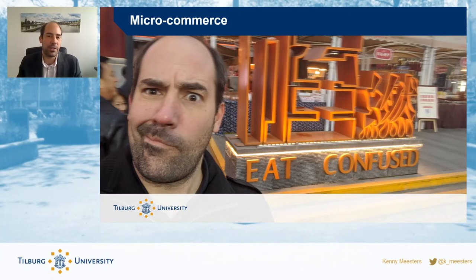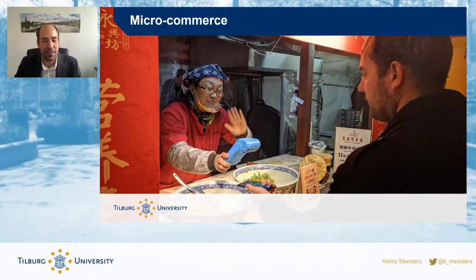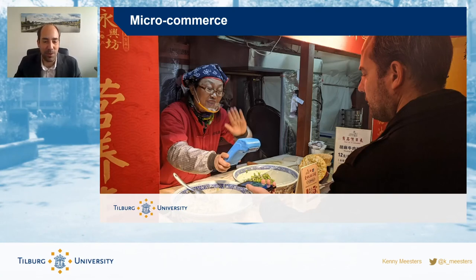Nowadays, some of these technologies that are purely information and technology are finding their way into the physical world. We always talked about the transition from companies offering services in physical stores to the online community using information technologies. But these information technologies have also enabled people to extend their services in the physical world. Here is an example from a food market in Xi'an, China — ironically named 'Eat Confused' — where at a local kiosk selling street food, the only thing I needed was a QR code on my mobile phone.